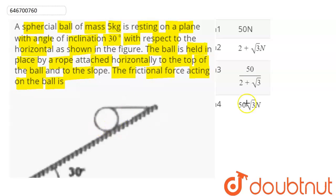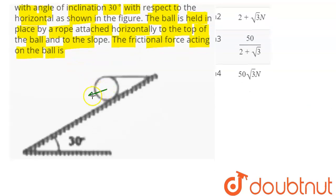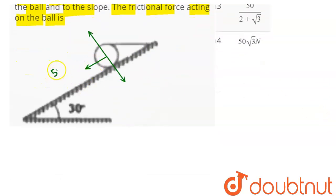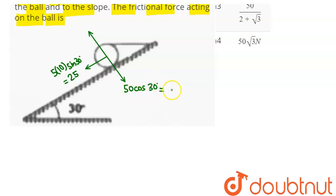The forces acting on this spherical ball: the component of weight along the inclined plane is mg sin30°, and the perpendicular component to the inclined plane is mg cos30°. The normal from the inclined plane acts perpendicular to it. Since mass is 5 kg and g is 10, mg sin30° = 50 × (1/2) = 25 N, and mg cos30° = 50 × (√3/2) = 25√3 N.